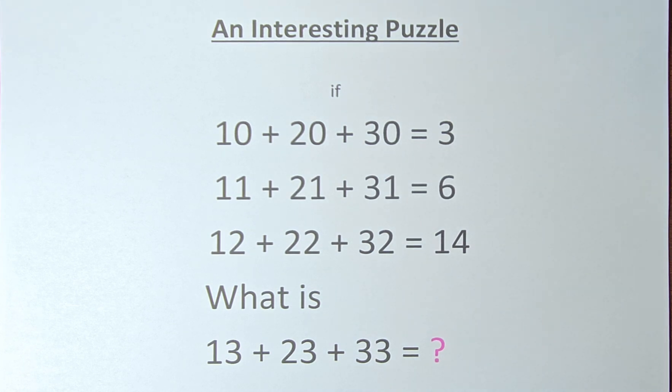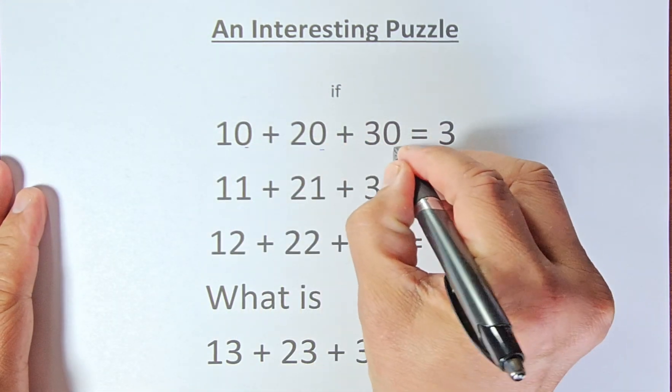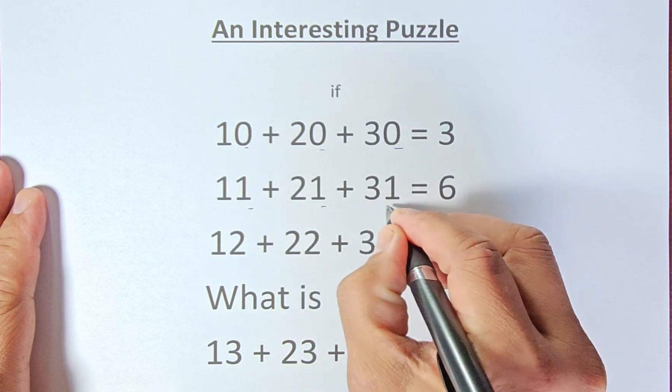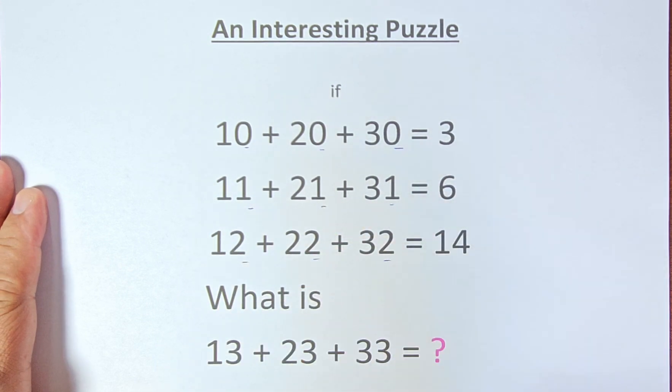let's try to solve this problem. If you look at 10, 20, 30 to get to 3, as well as 11, 21, 31 to get 6, and 12 and 22 plus 32 to get 14, it is quite impossible. So we need to manipulate the number. In fact, the second number.